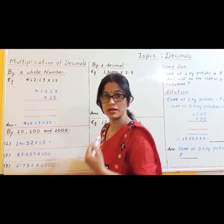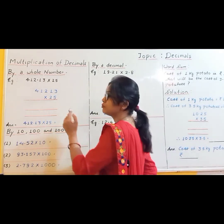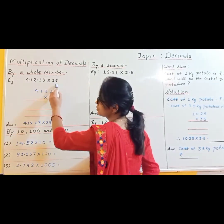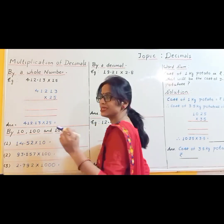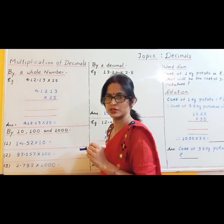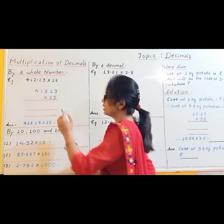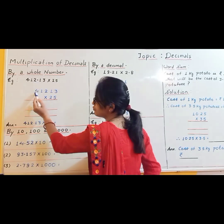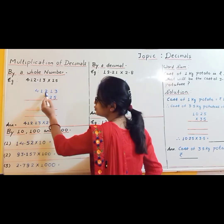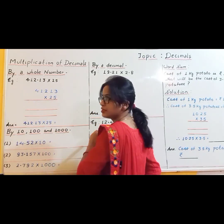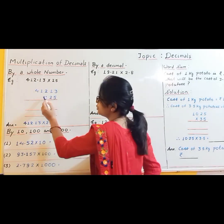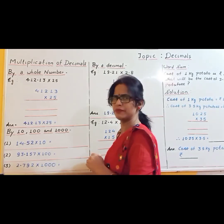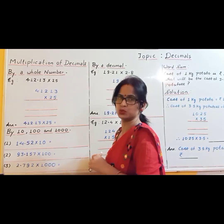The method is: first of all, we have to multiply both the numbers without the decimal point. So arrange them without decimal. It will be 41213 into 25. Now multiply as we normally do.